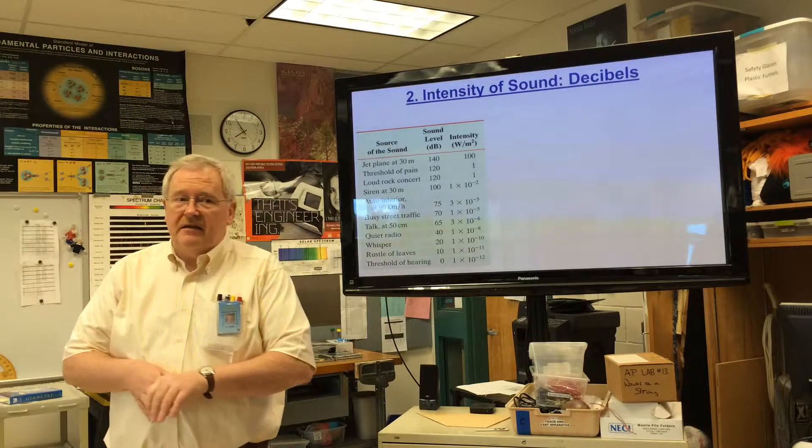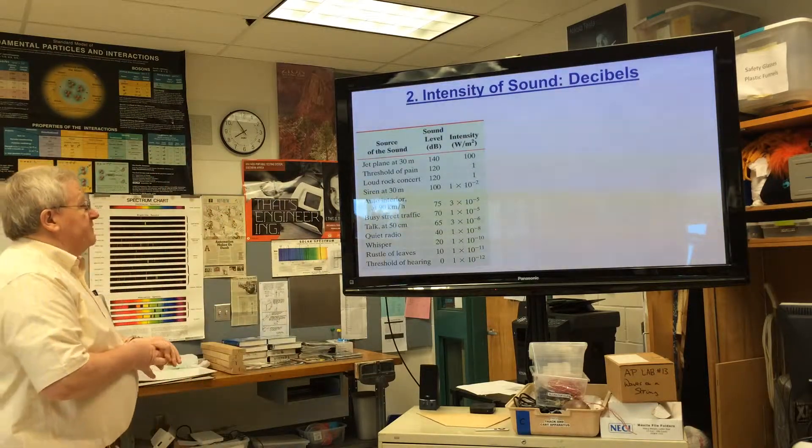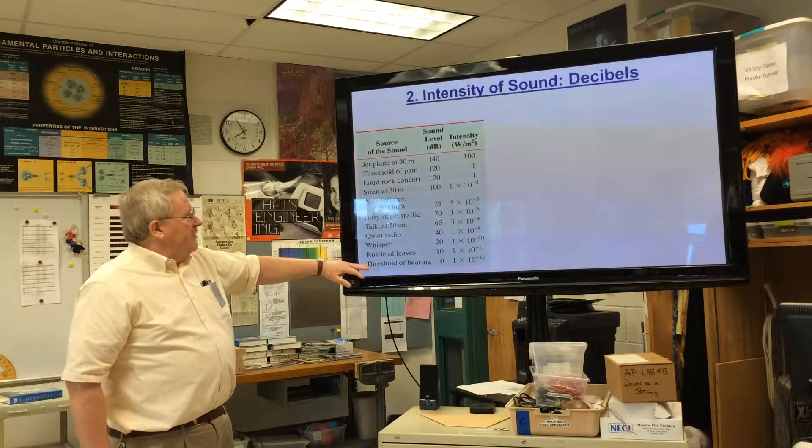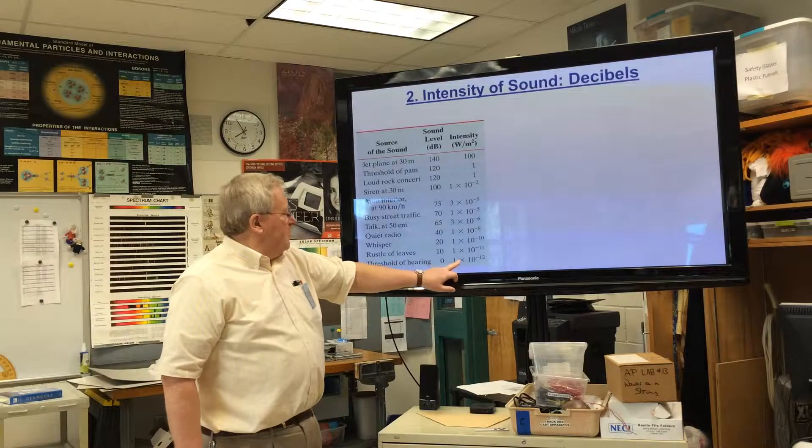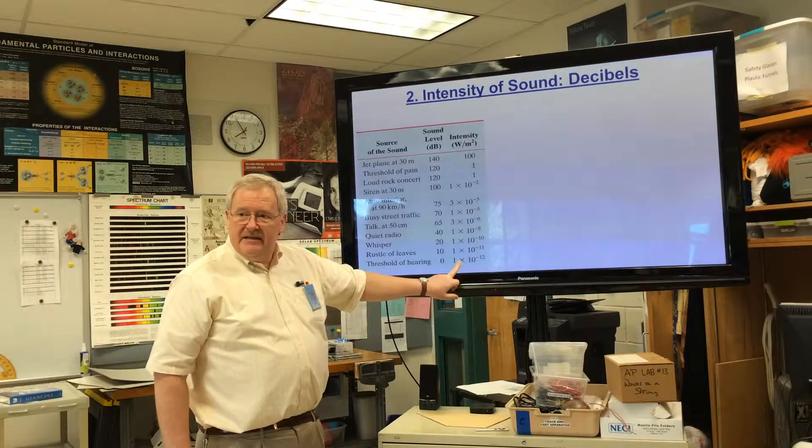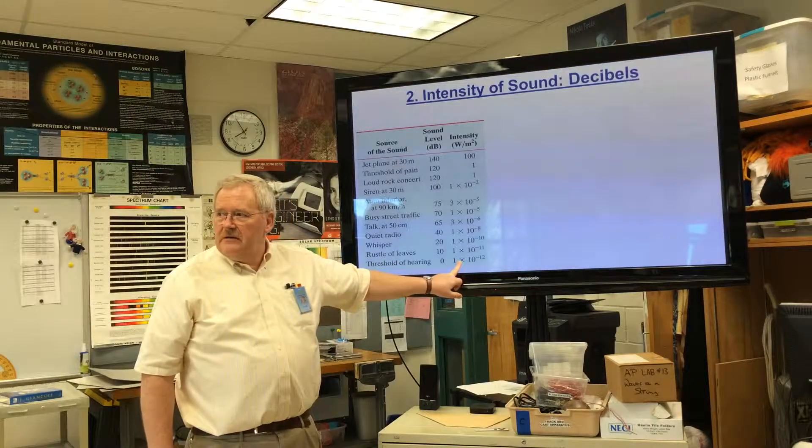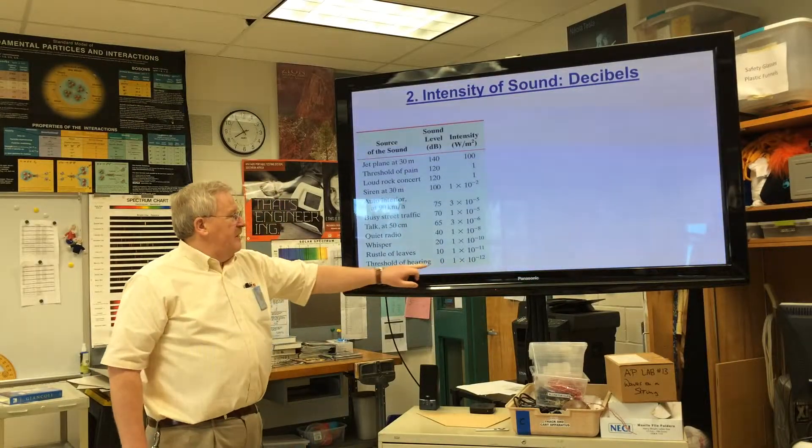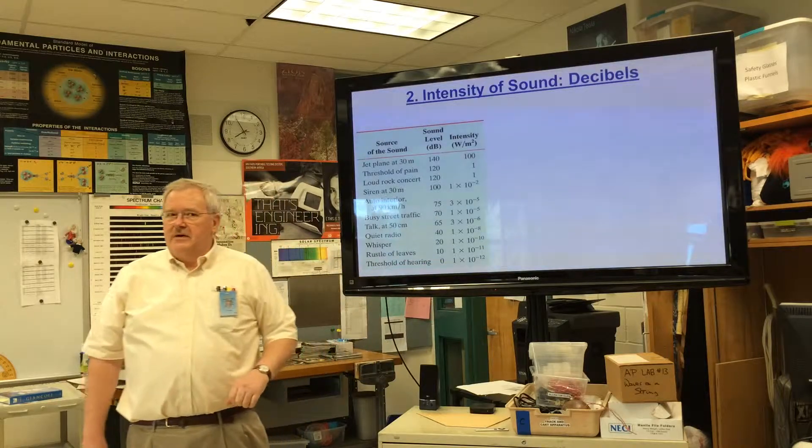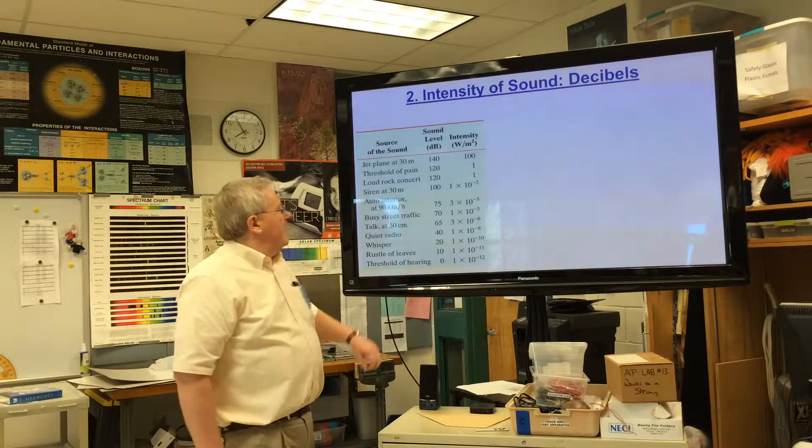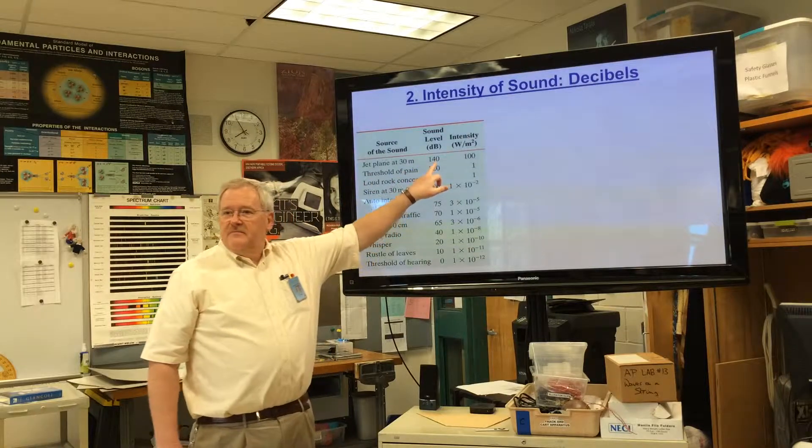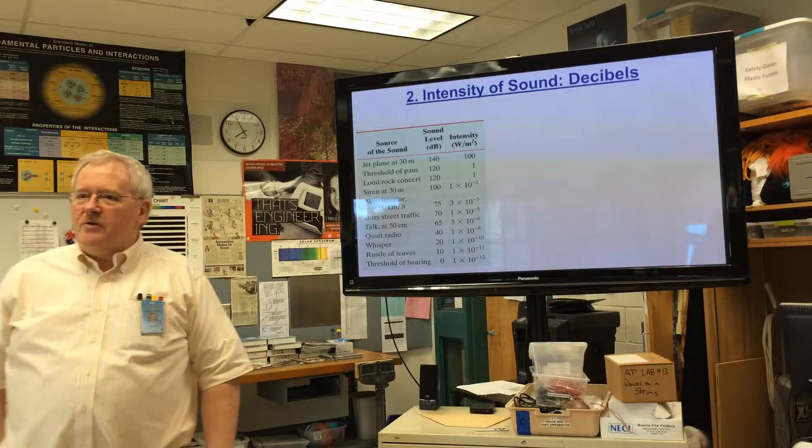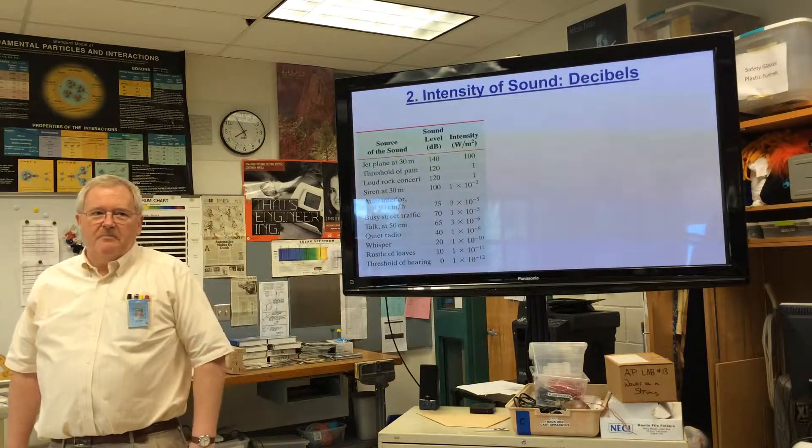Intensity of sound - decibels. What is a decibel? You can see that there's a difference between the intensity, which is watts per square meter, and decibels. The threshold of hearing we take as being a sound level of 0 decibels. A jet plane at 30 meters: 140 decibels. That's 100 times above the pain threshold.